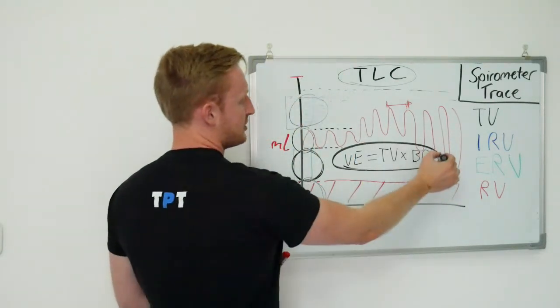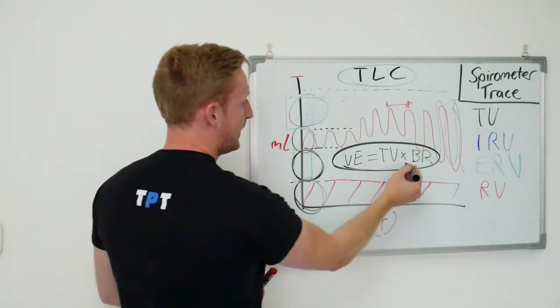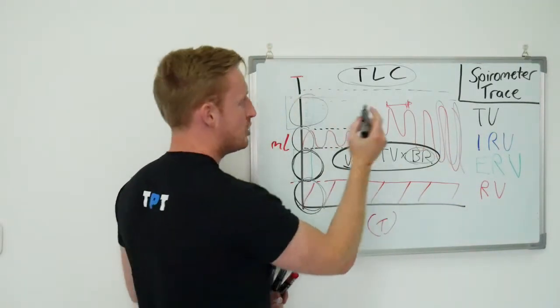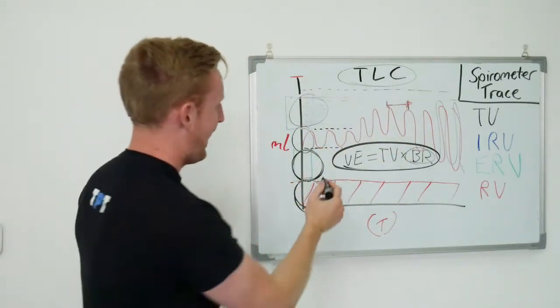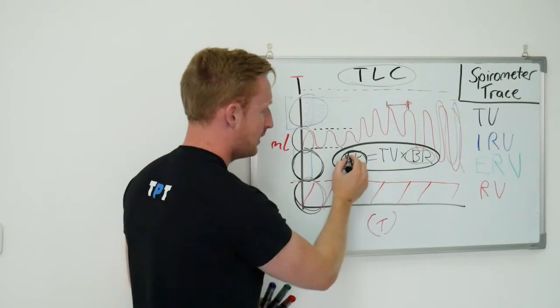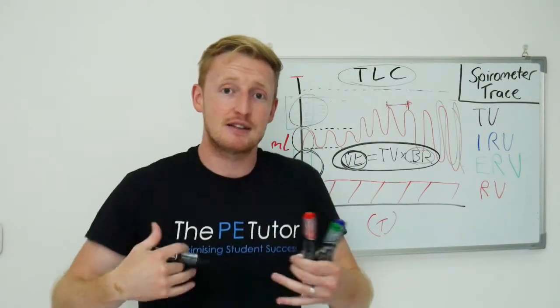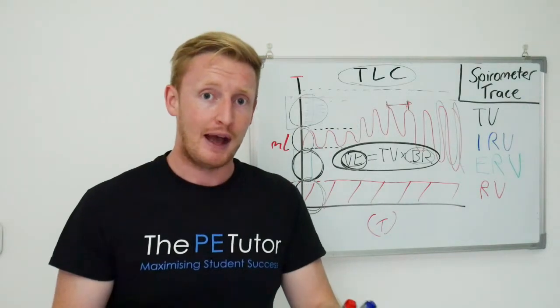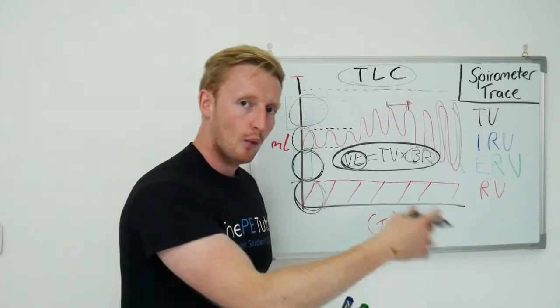We know that minute ventilation equals tidal volume times breathing rate. If we can increase the tidal volume, so the wave height, and we can decrease the wavelength, our minute ventilation is going to be increasing. Which means better oxygen delivery for our working muscles, better CO2 delivery, and we're going to respond better to exercise, to be able to exercise for longer without fatigue.